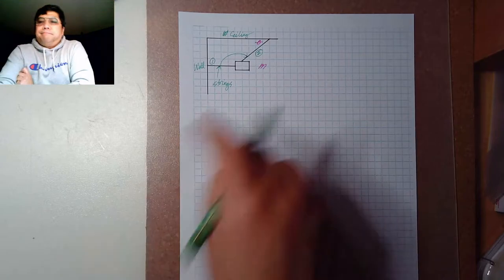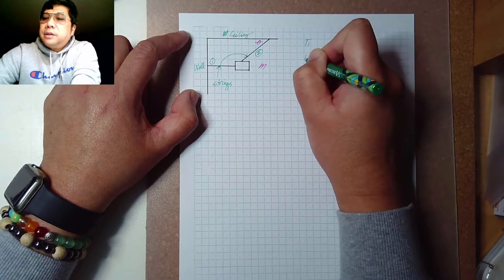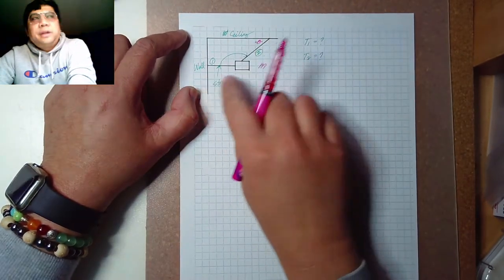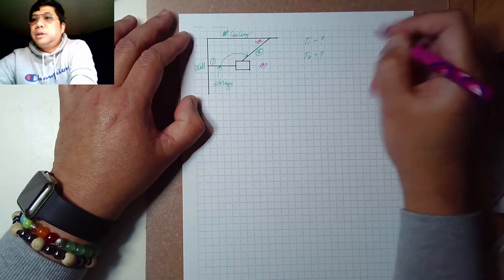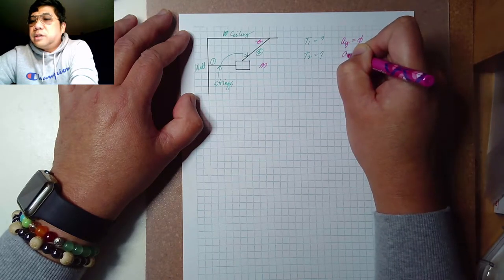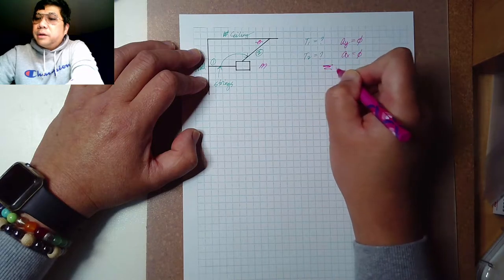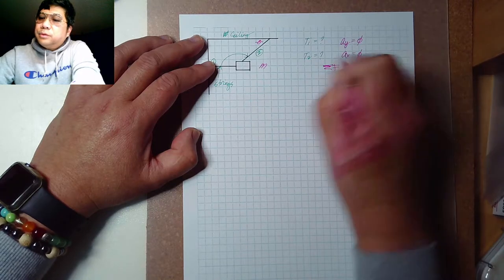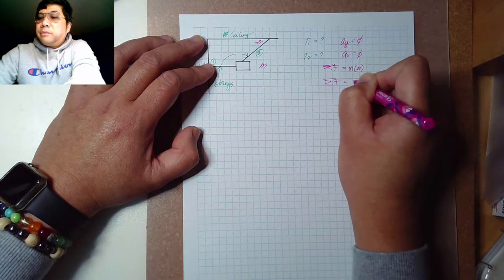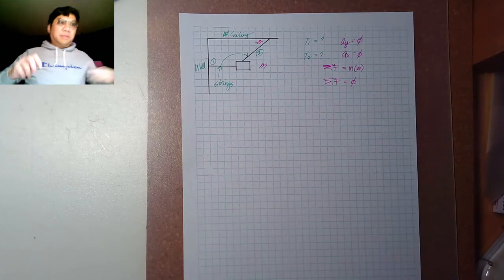The question is: let's solve for the tension — tension one and tension two — assuming the strings are strong enough and will not break or cause any change in motion. There is no change in motion along the y-axis, so acceleration is zero, and no change along the x-axis either. This means the summation of forces equals mass times zero, so the forces acting on the object are balanced and sum to zero.